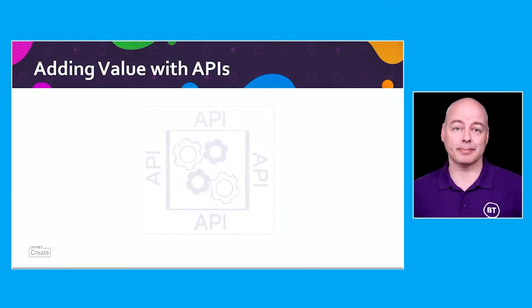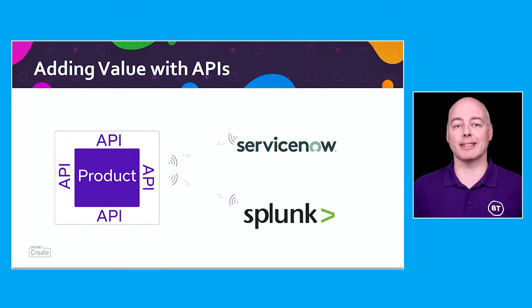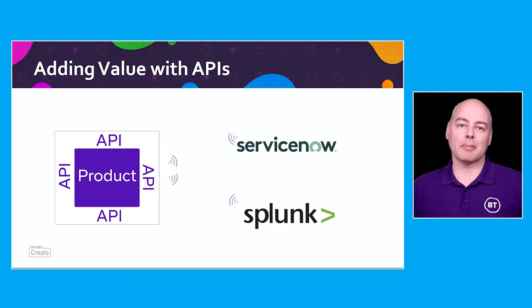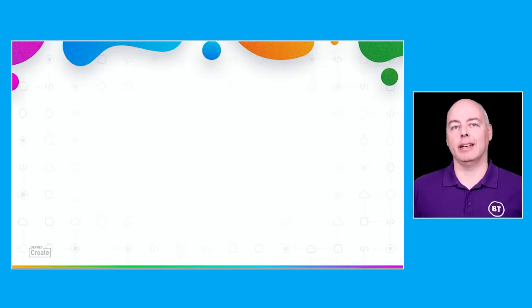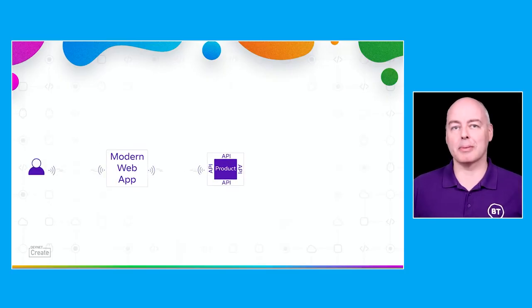A well-defined API adds value by allowing anybody with the right permissions to access it — who you are determines what you can do. Some vendors have already written direct integrations for products, for example ServiceNow and Splunk, where connectors allow ServiceNow to directly interact with it, enhancing the value of both. If I'm going to select a workflow engine, a SIEM, or a security product, I want to know they can integrate together. Interoperability and modularity — being able to interface with an API — is not only very important, but business critical.